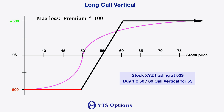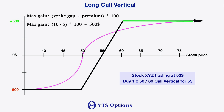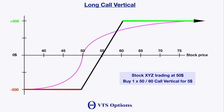Starting with the loss side, it is limited to the premium paid to open the trade — you can never lose more than that. In this case we paid $5, so $5 multiplied by the options factor of 100 means the max loss is $500. For the max gain, it's simply the difference in the strike prices minus the premium paid. There's a $10 gap in these strikes and we paid $5, so the max gain is also $500. No matter what happens, both max gain and max loss are known ahead of time.